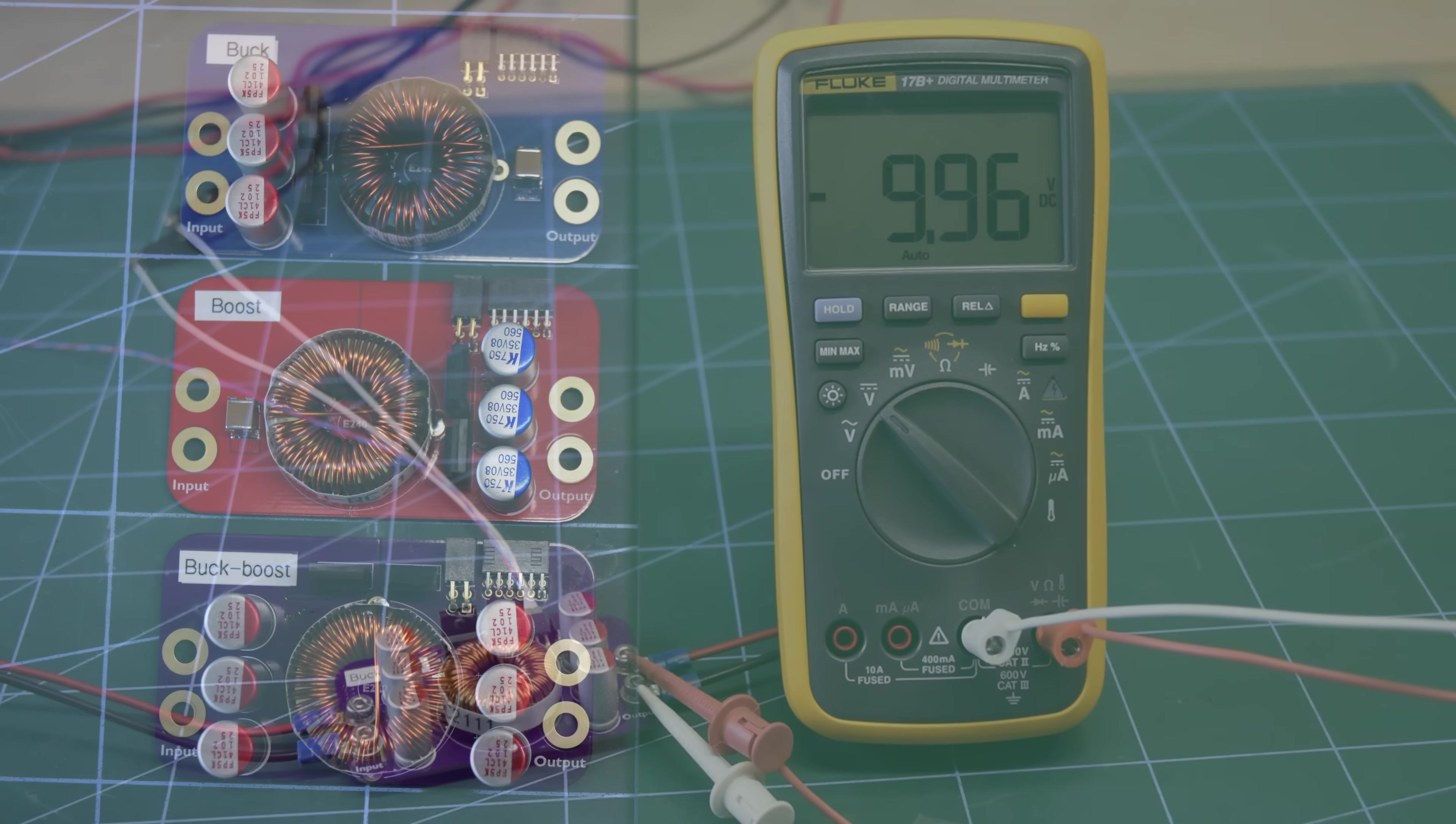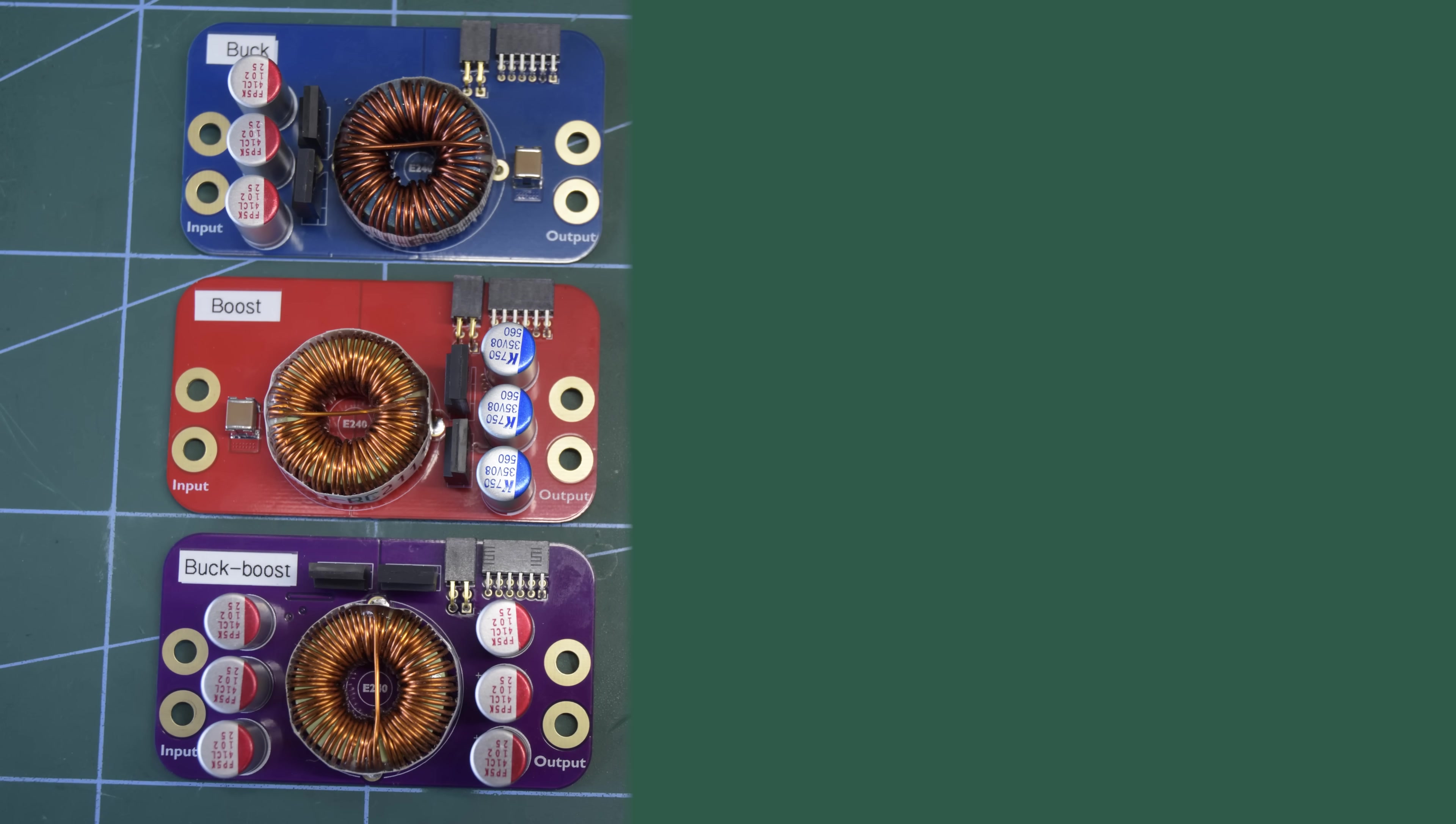Now you've probably guessed based on the output voltages we've been getting that there's some kind of relationship between output voltage, input voltage and duty cycle. And indeed, all three of these converters have quite simple equations that dictate the output voltage for a given input and duty cycle. This is particularly nice at 50% duty cycle, like we're at at the moment, where the buck converter will half the input voltage, the boost converter will double the input voltage, and the buck boost converter will keep the magnitude the same, but invert it. Lovely.